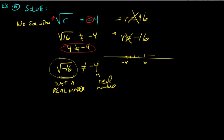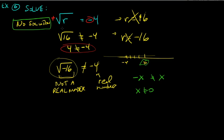The key takeaway: the square root is always positive and can never equal a negative. However, consider: negative square root of r equals negative 4. Now both sides are negative. Multiply both sides by negative 1, giving positive square root of r equals positive 4, so r equals 16.